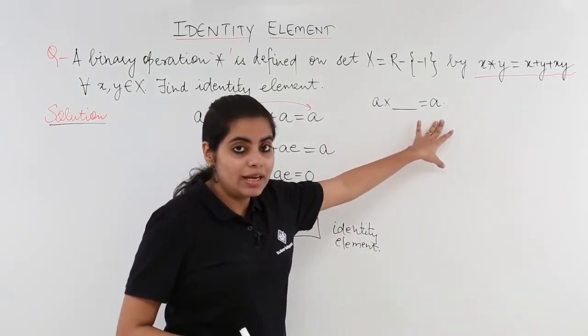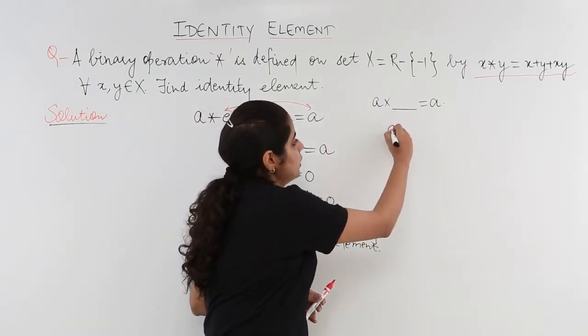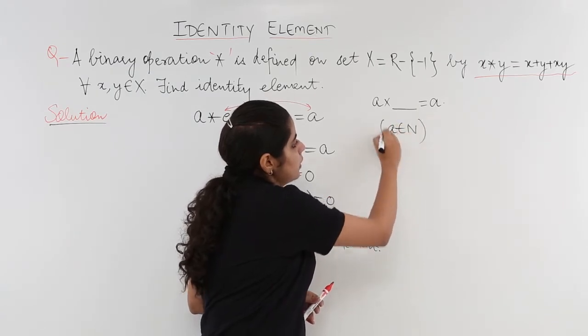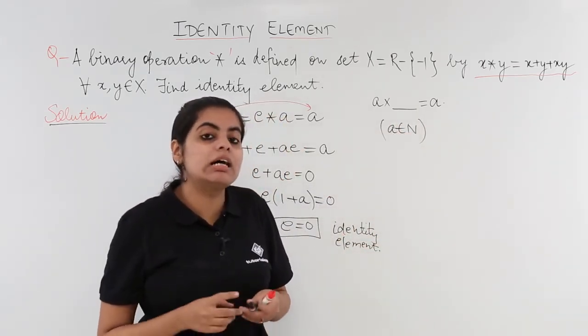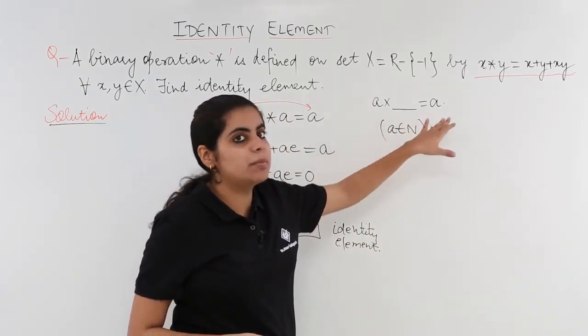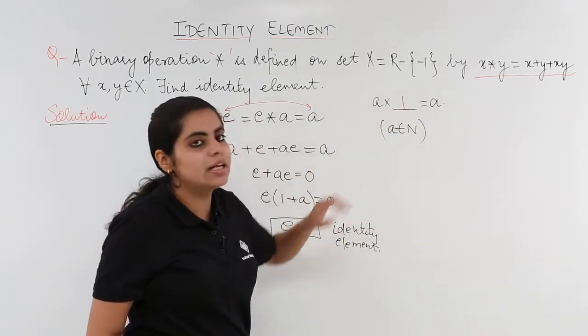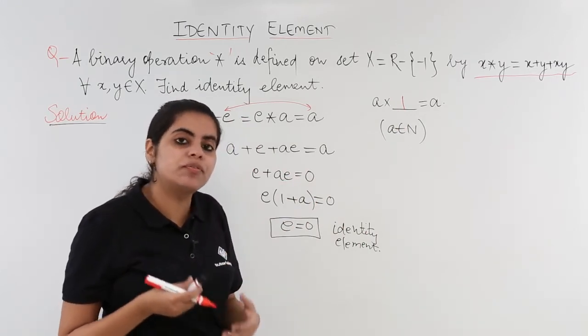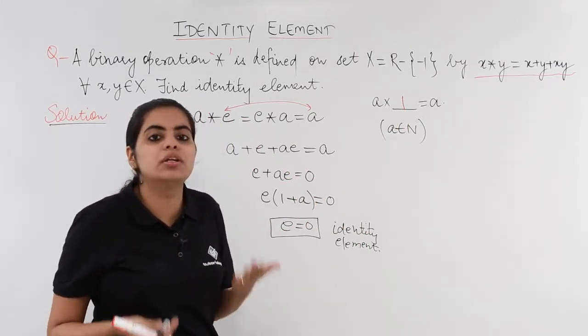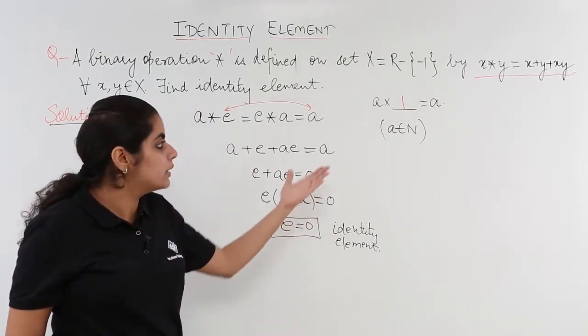When we multiply and a belongs to say natural numbers, what would be the answer? Here the answer would be a multiplied by what gives me a. A multiplied by 1 gives me a. So here the identity element was 1. So different questions can get me different values of identity element.